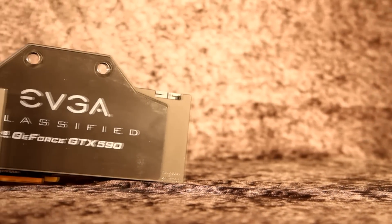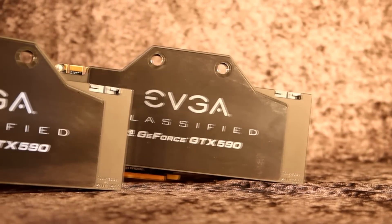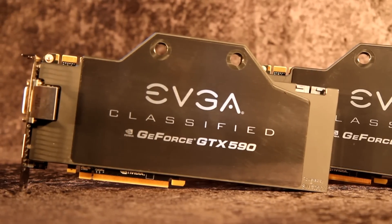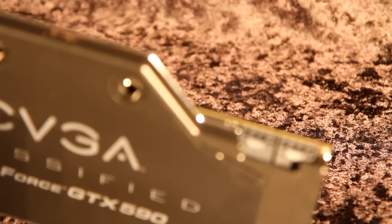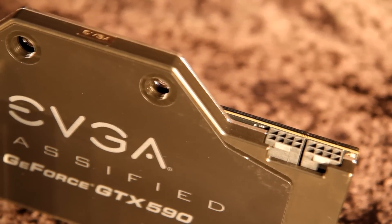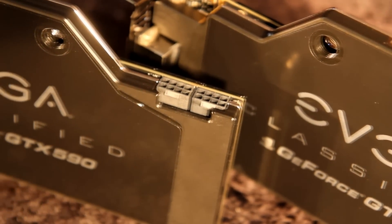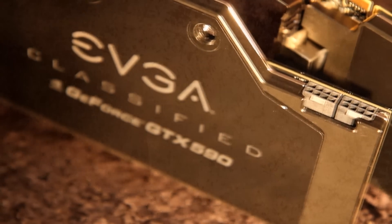The specs are as followed: 630 megahertz core clock chipset, 3 gigabytes of GDDR5 memory with 3456 megahertz effective memory clock, 768 bit memory interface, 1260 megahertz shader clock, and 1024 CUDA cores.